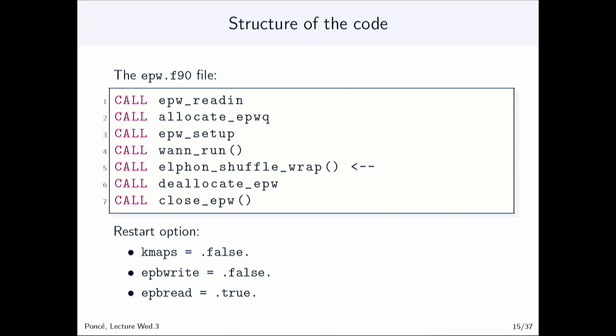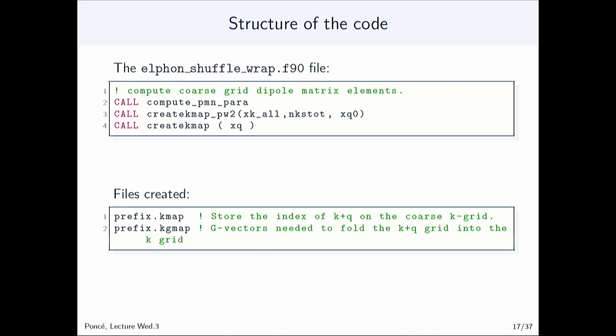Next there is the call to the main routine 'elphon_shuffle_wrap', a wrapper to the electron-phonon shuffle routine. At the end of this call you can also restart the calculation. The code can write the EPB file and then read it if you want to restart from there.